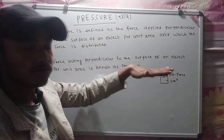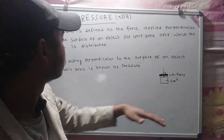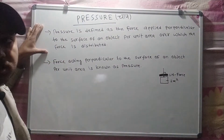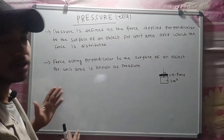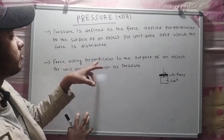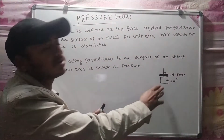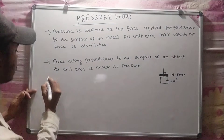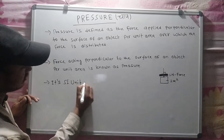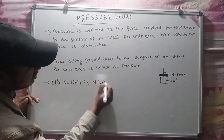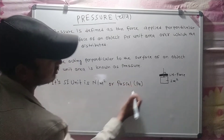So, the force acting perpendicular to the surface of an object per unit area is known as pressure. The unit of pressure is Newton per meter square, also called Pascal. Let's take a look at the formula.